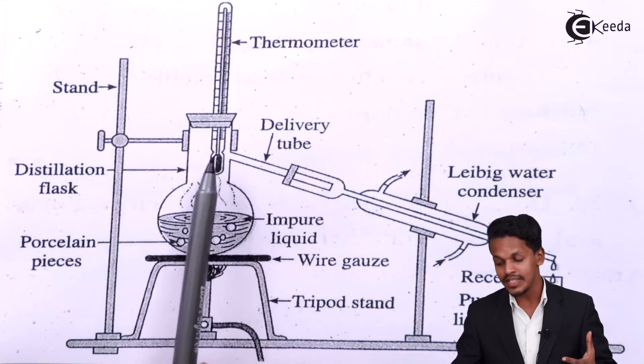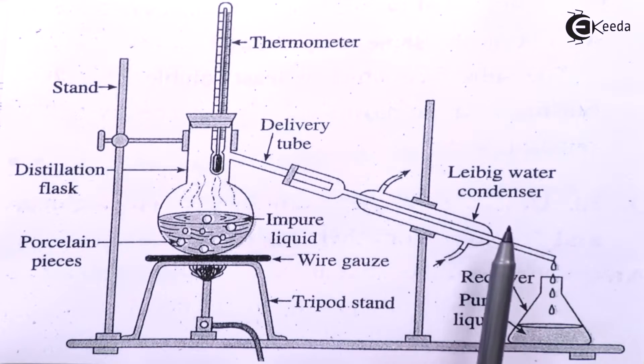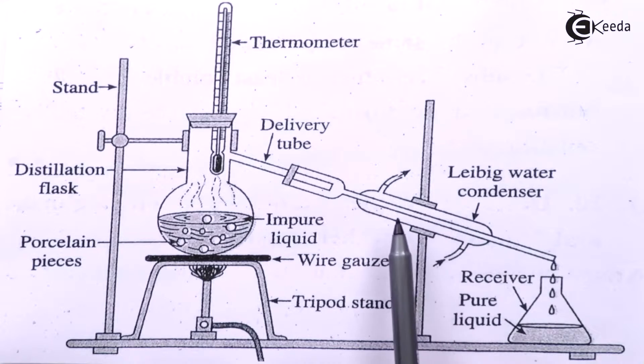This is basically connected - this is the delivery tube that you could see over here and this is what it is connected to the Leibig water condenser. And this is how we can basically find that the liquid gets condensed after when it comes to a boiling state, and it condenses and here it is how we can obtain a pure liquid.